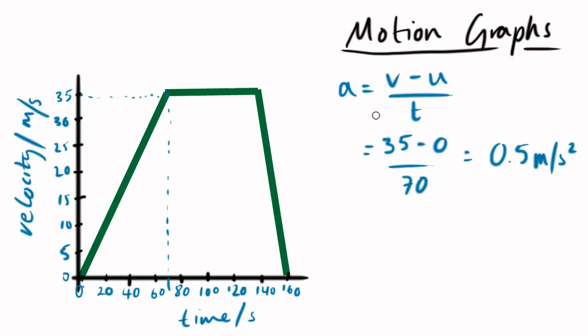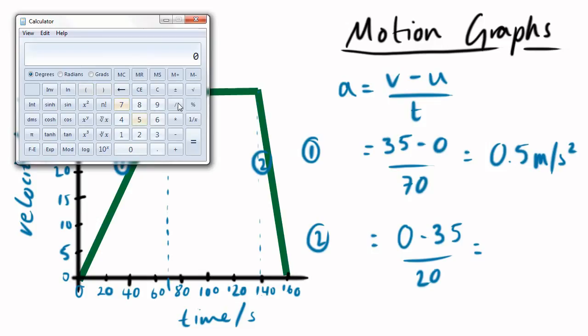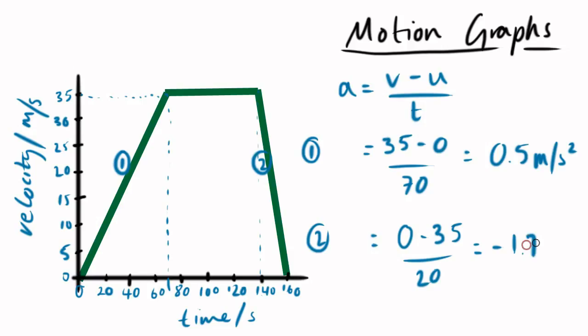Now this is why that equation is a pretty useful one to use. The second section, our initial velocity is 35 and our final is 0. So I put the numbers in where the algebra indicates. 0, take away 35, divided by, how long did that take? Only 20 seconds this time. Minus 35, divided by 20, equals minus 1.75 metres per second squared.